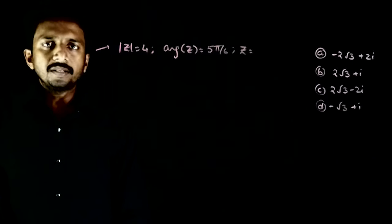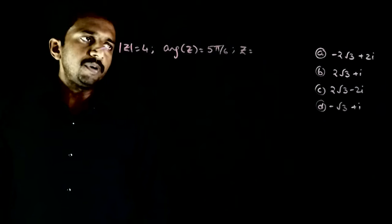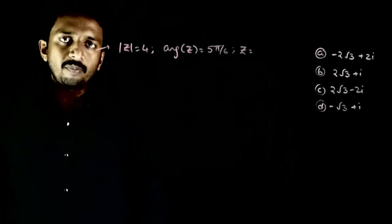Welcome students. This question is given that modulus of z is equal to 4 and the argument of z is 5π by 6. So what is the complex number z?